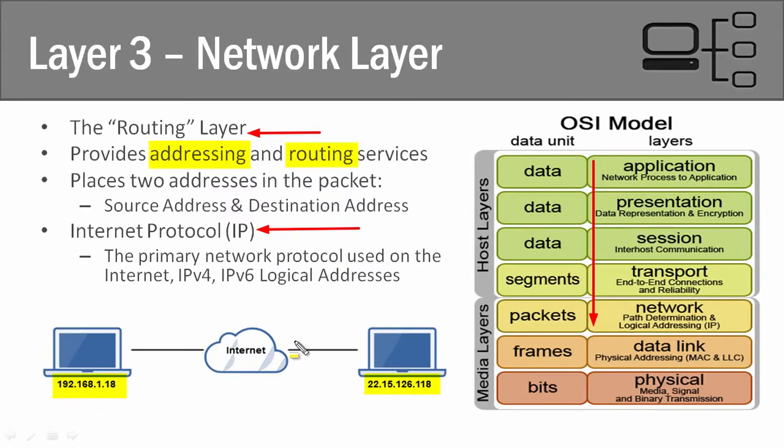We have the internet here as a wide area network, and what do we use to connect networks together? We use routers to connect networks together and communicate across a wide area network. So this layer is all about IP addressing, routing, and routing protocols.